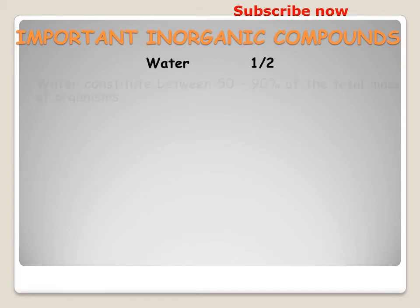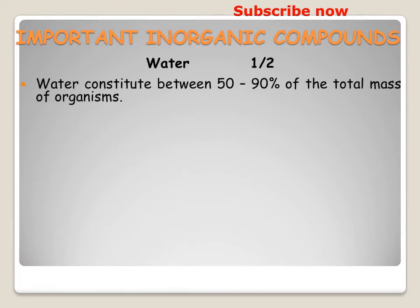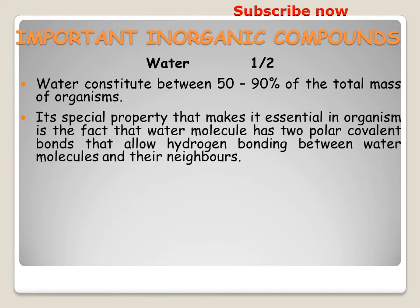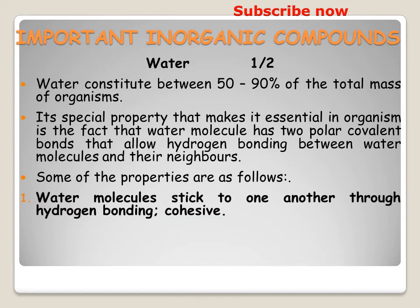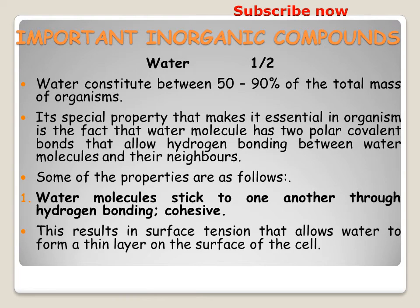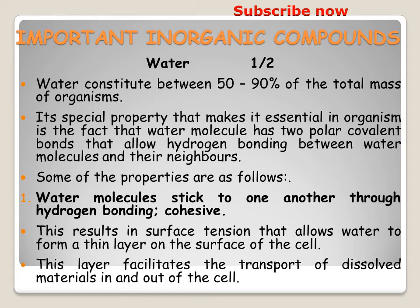Water constitutes between 50 and 90% of the total mass of organisms. Its special property that makes it essential is that water molecules have two polar covalent poles that allow hydrogen bonding between water molecules and their neighbors. Water molecules stick to one another through hydrogen bonding, i.e. through cohesive forces, resulting in surface tension that allows water to form a thin layer on the surface of the cell.